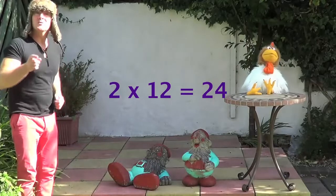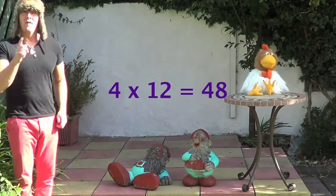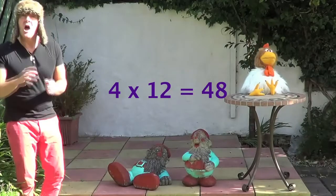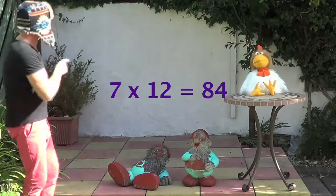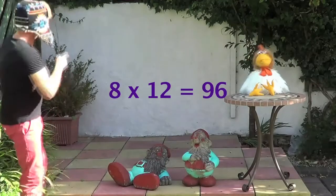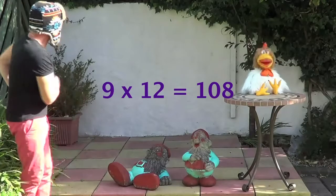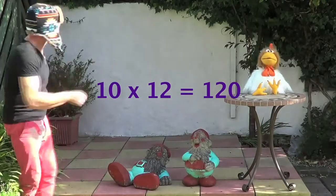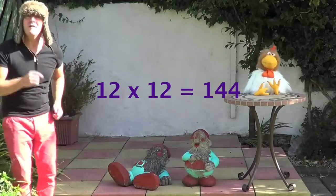One times 12 is 12, two times 12 is 24, three times 12 is 36, four times 12 is 48, five times 12 is 60, six times 12 is 72, seven times 12 is 84, eight times 12 is 96, nine times 12 is 108, ten times 12 is 120, eleven times 12 is 132, twelve times 12 is 144.